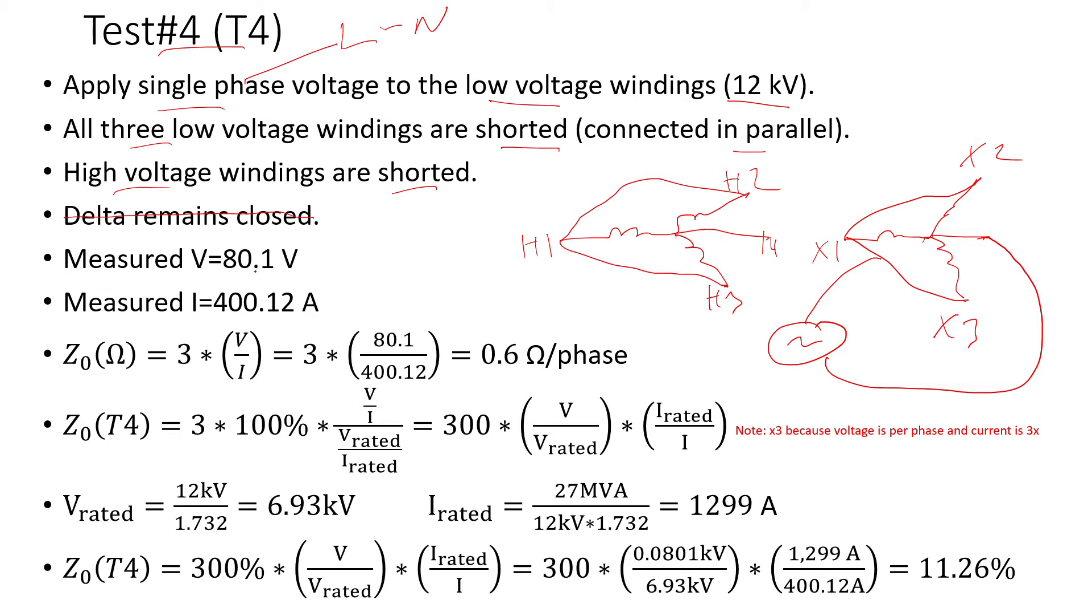The measured voltage is 80.1 volts. The measured current is 400.12 amps. So this is the equation. You can calculate the zero sequence impedance in ohms per phase. And here's the equation to calculate the zero sequence impedance obtained from test 4.